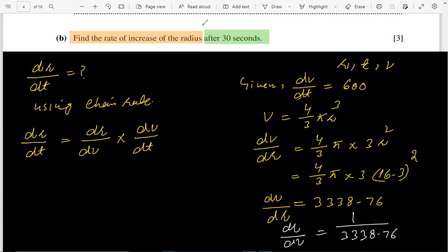Now just plugging in values, dr/dt will be dr/dV, 1 over 3338.76, times dV/dt which is given, 600. By evaluating, answer is 0.180 centimeter per second, and that is dr/dt which is rate of increase in radius.